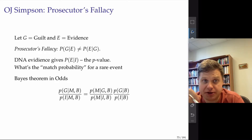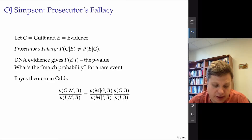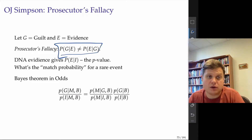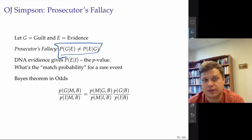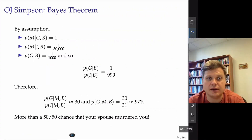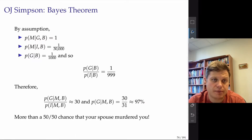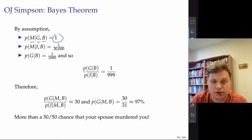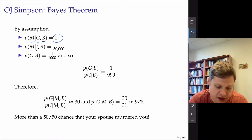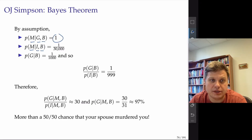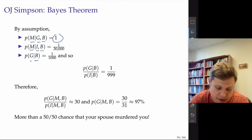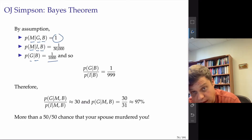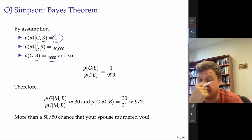We're going to calculate the posterior odds and see that the prosecutor's fallacy plays a negative role. If the prosecutor assumes the likelihood equals the posterior probability of guilty, that's a big mistake — those things are far away from each other. The probabilities we have are: probability of being murdered given guilty and batterer is 1; probability of being murdered given husband is innocent and a batterer is 1 over 30,000; and probability of being guilty given that he is a batterer is 1 in 1,000, since 1 of every 1,000 batterers eventually murders their wife.